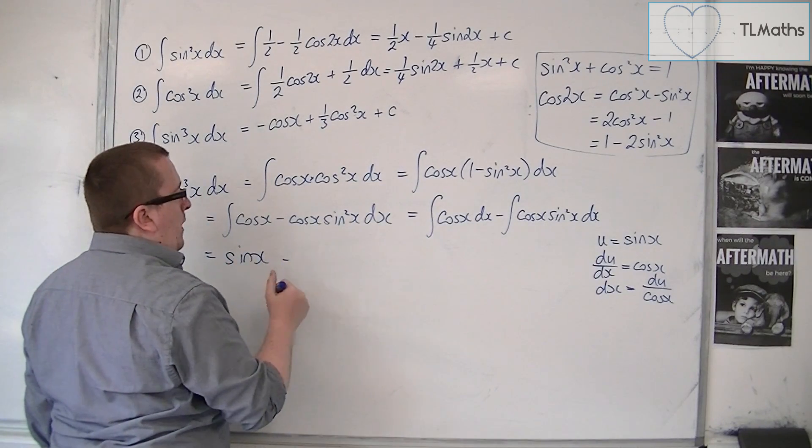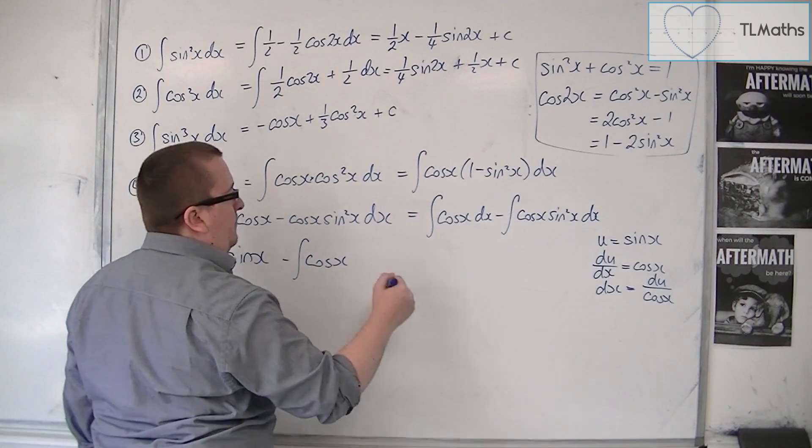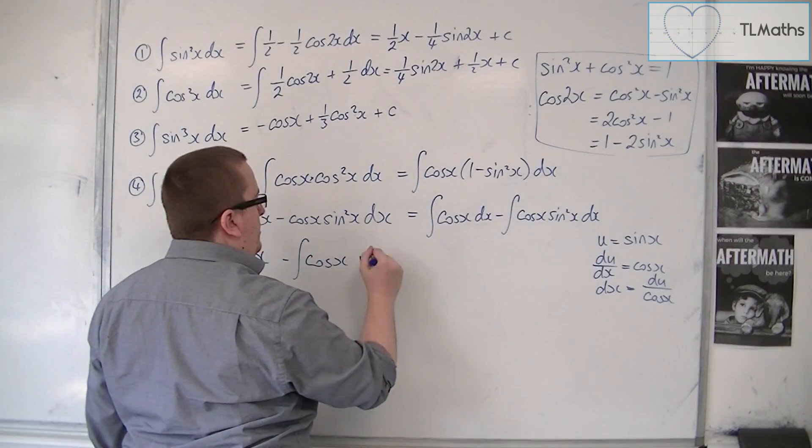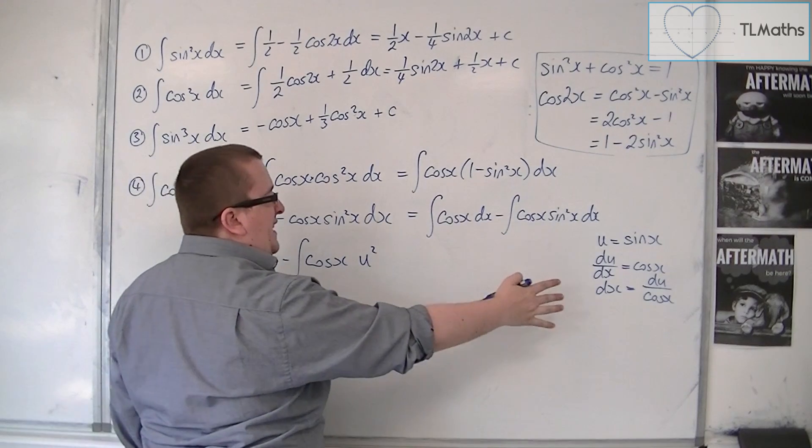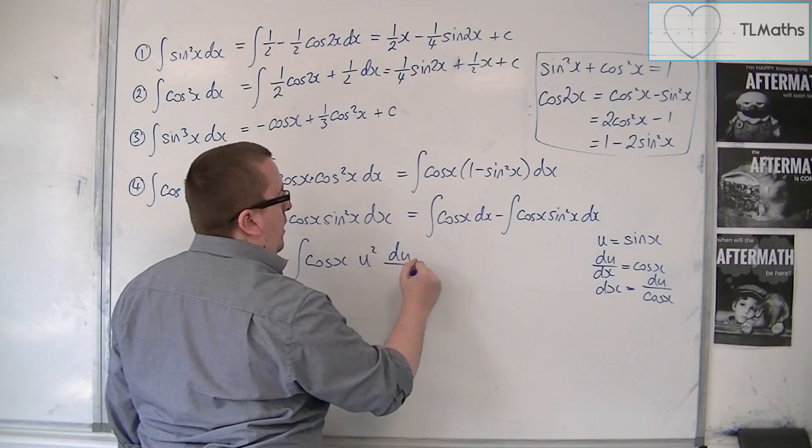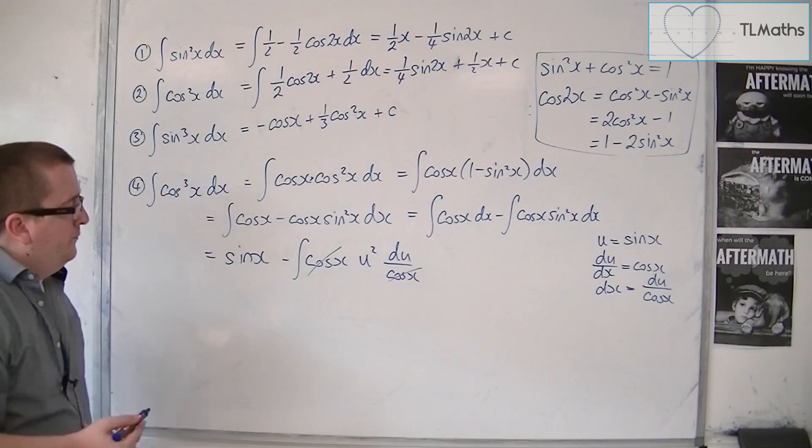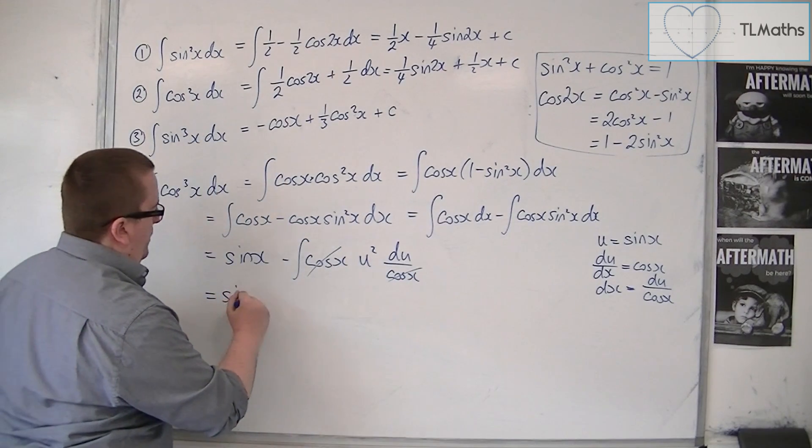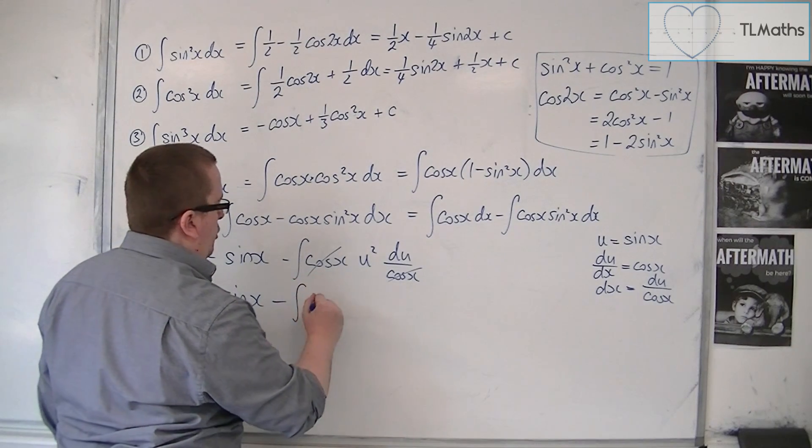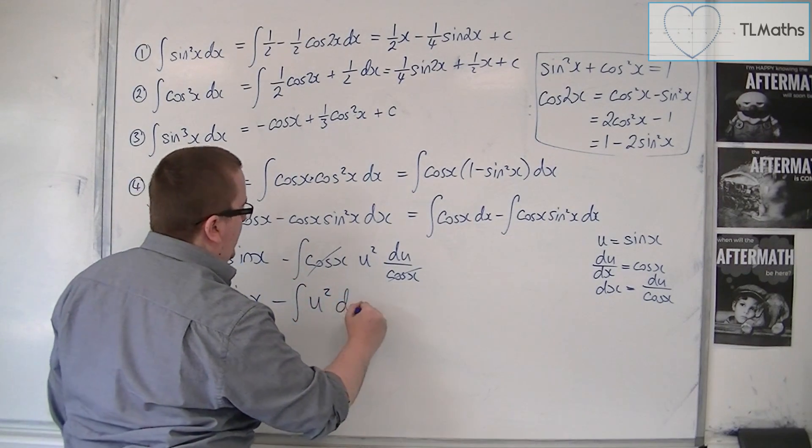Take away the integral of cosx times sine squared, so u squared, times dx, which is du over cosx. Those cosines cancel. And we're left with sinx take away the integral of u squared du.